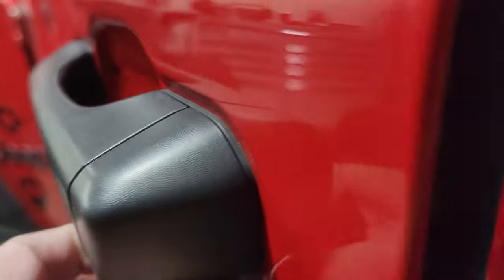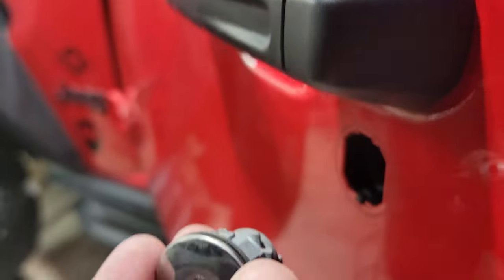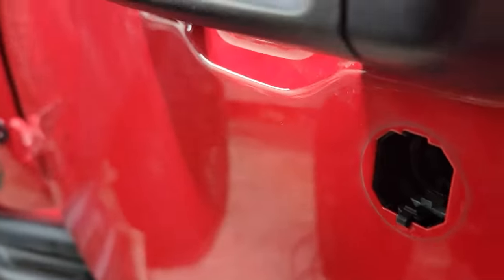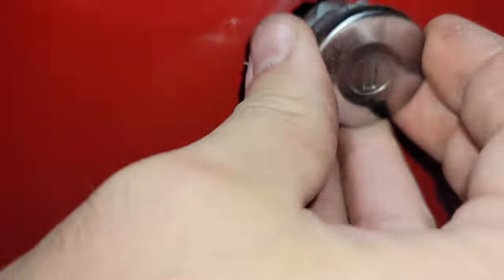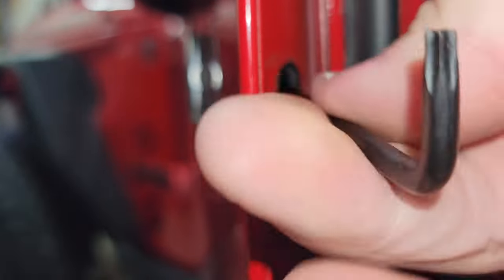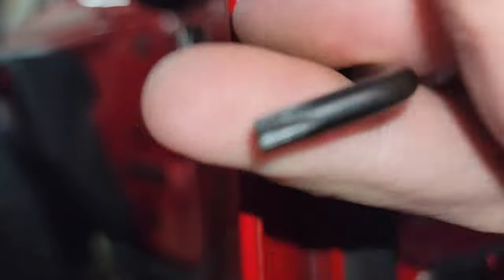Installation is basically just the reverse. You want to pay attention to that notch that we were looking at and make sure that's on the top there so when you insert it, it lines up and will go right in. Then just tighten up that T25 Torx and once you're done with that, replace the sticker.